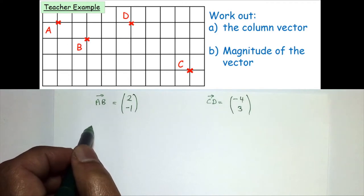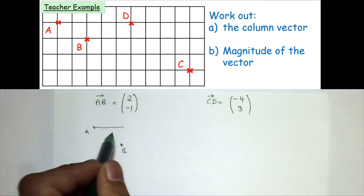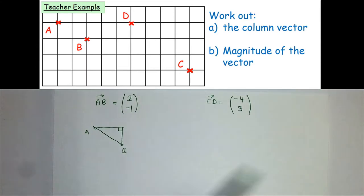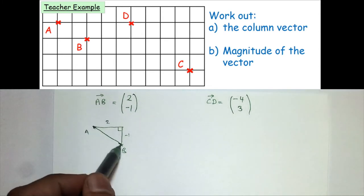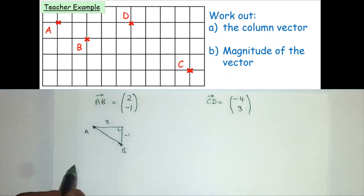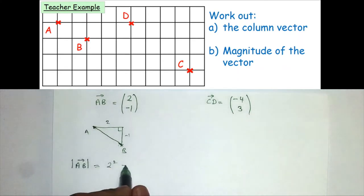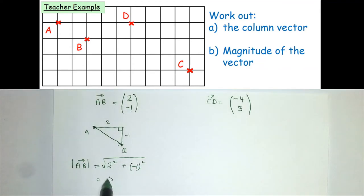For the magnitude of these vectors, looking at A and B: point A goes two squares to the right and one square down. Joining the two points forms a right-angle triangle, so we can use Pythagoras's theorem. The magnitude of AB is written with two straight lines on either side, and equals the square root of 2 squared plus (-1) squared, which is the square root of 4 plus 1, giving the square root of 5. I'll leave that answer in surd form.